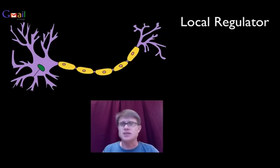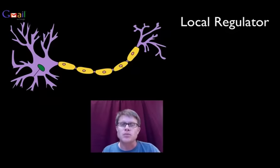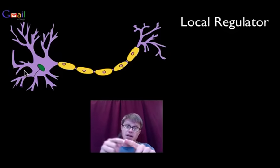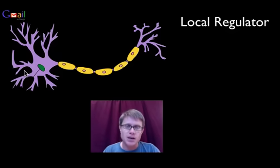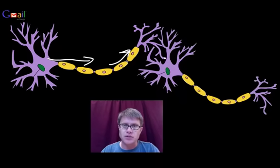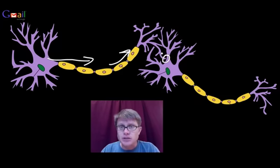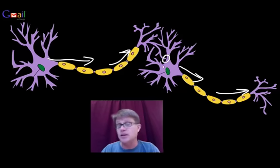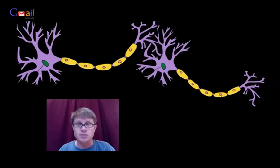Next is the idea of a local regulator. There's a distance between the two cells, but we still have to make sure the message gets across. A perfect example is when neurons are connected. A neuron is going to take a message — say I poke my finger — and send it to my spinal cord, then to my brain and back so I can act on it. The message travels in one direction and eventually has to cross to another neuron. But right where those two neurons come together, they're not actually connected. We still need that message to keep going all the way to the brain, so we have to use a local regulator to make sure it gets across.